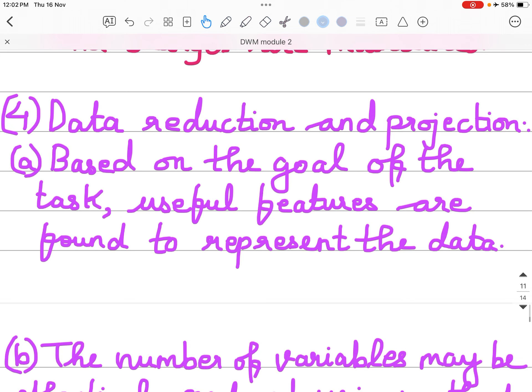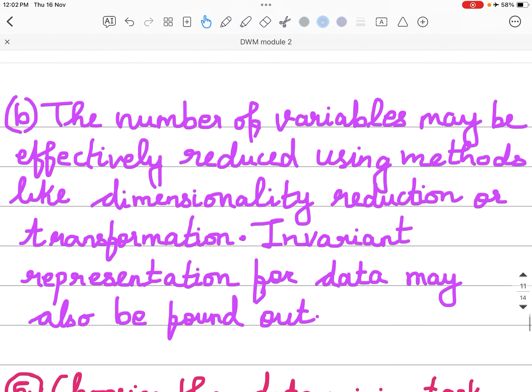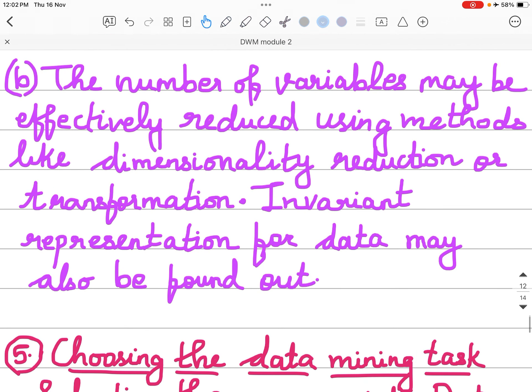Fourth is data reduction and projection. Based on the goal of the task, useful features are found to represent the data. The number of variables may be effectively reduced using methods like dimensionality reduction or transformation. Invariant representation for data may also be found out.